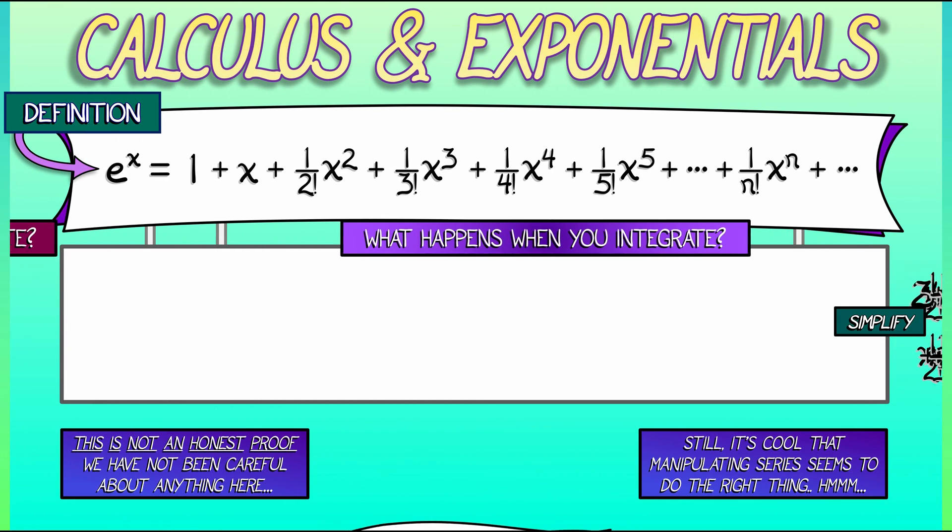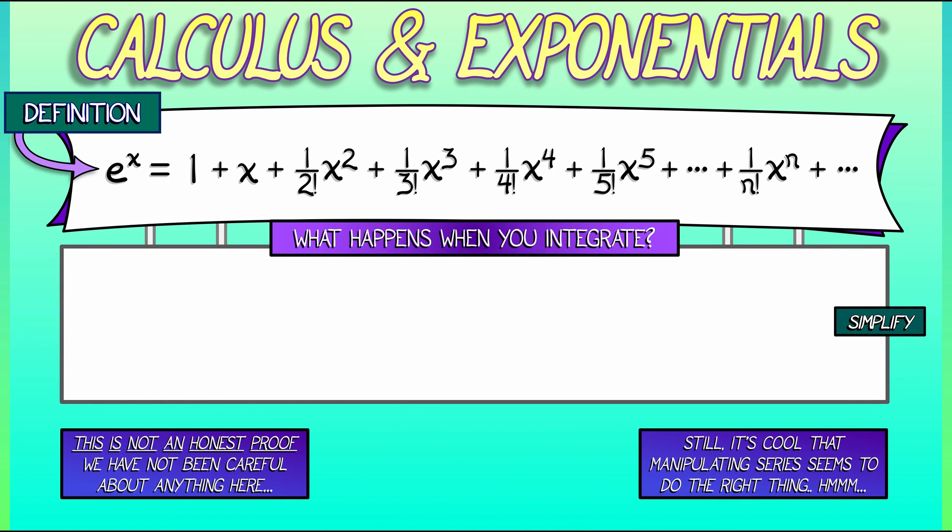What happens if instead of differentiating, we integrate e to the x? The integral of e to the x dx is what? Well, what's the integral of 1? That's simply x. What's the integral of x? That's x squared over 2. The integral of 1 over 2 factorial times x squared is 1 over 2 factorial times the integral of x squared. That's x cubed over 3.